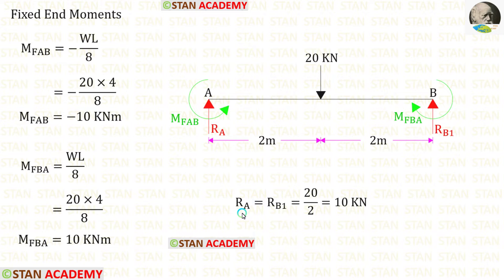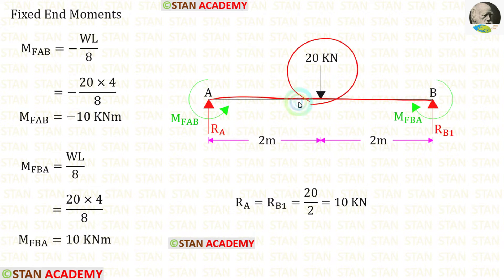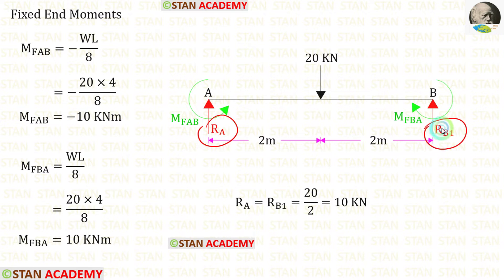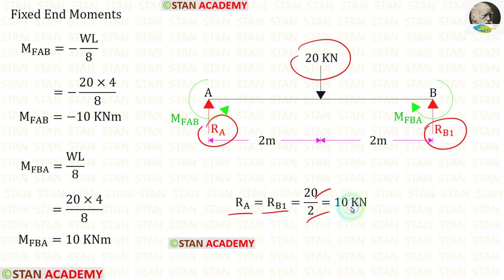Now let us find the vertical reactions. In span AB, we have symmetrical loading — the point load is acting at the center. To find RA and RB1, we have to divide the point load 20 by 2. When we do that, we get RA and RB1 as 10.